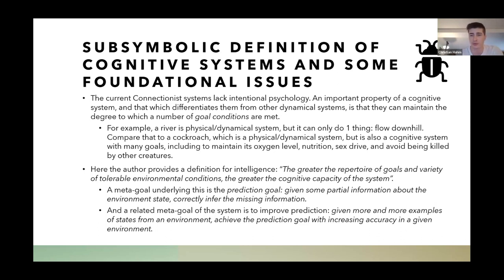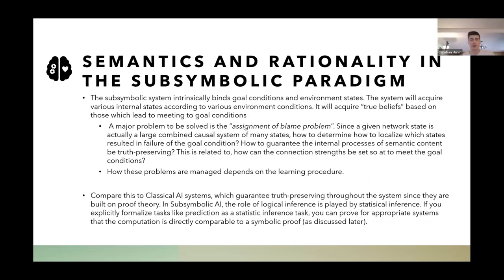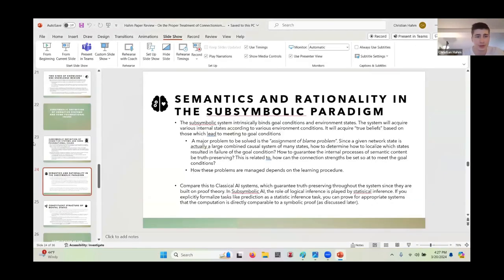The greater the repertoire of goals and variety of tolerable environmental conditions, the greater the cognitive capacity of the system. A meta goal underlying this is the prediction goal: given partial information about the environment, the system needs to correctly infer the correct missing information and use it. A related meta goal is to improve that prediction process — not only make predictions from partial information, but over time learn to make even better predictions with increasing accuracy for a given environment.